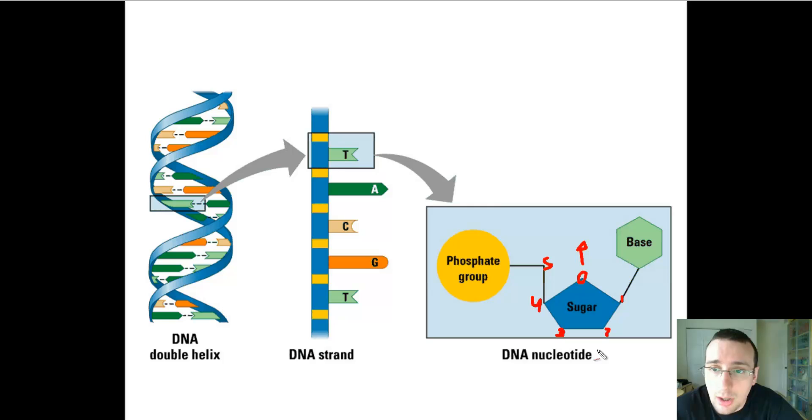And then you have the bases. In RNA, you have U, C, A, and G. And in DNA, you have T, C, A, and G. And so these are our basic components of the nucleotides.